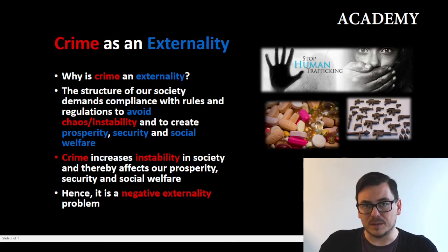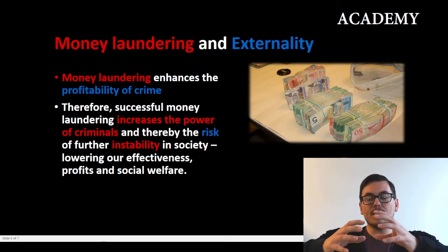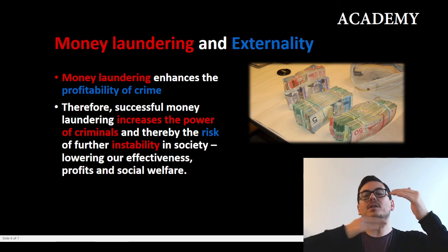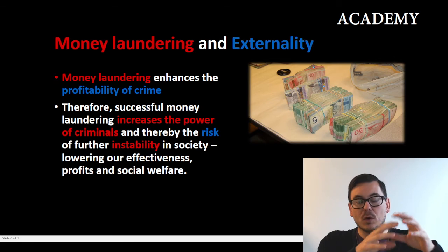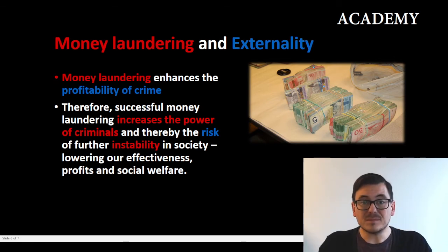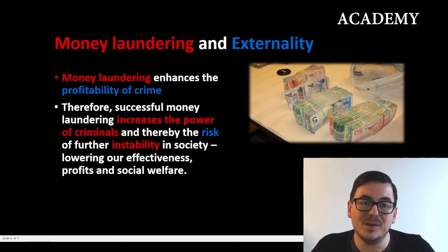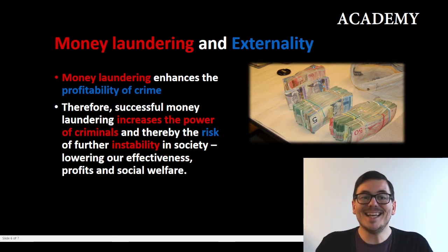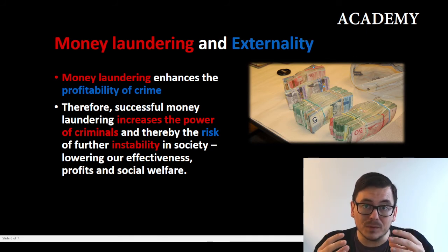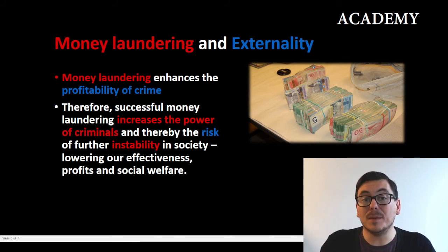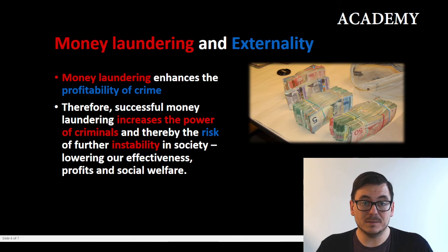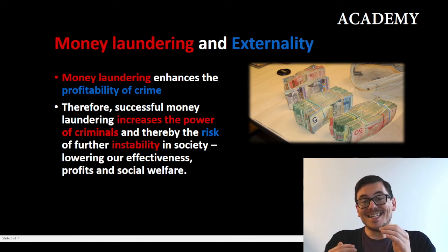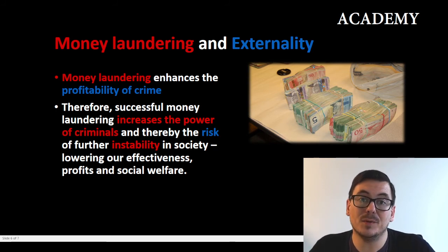But what about money laundering specifically? We know that money laundering is the process that happens after someone earns money from criminal behavior or a criminal business — they need to launder that money. So is money laundering per se also an externality problem? Yes it is. Because when money laundering is successful, it enhances and increases the power of criminals and the level of crime can increase, thereby raising the risk of further instability in our society. Hence money laundering is also part of a negative externality problem to society.